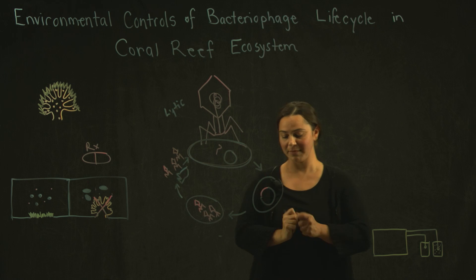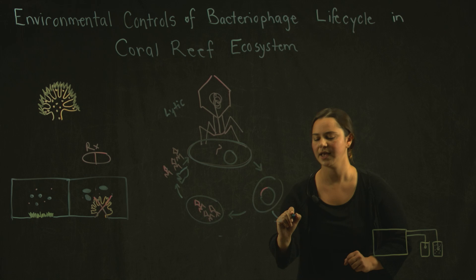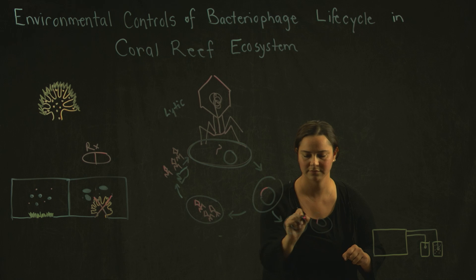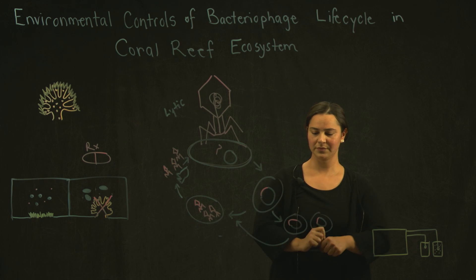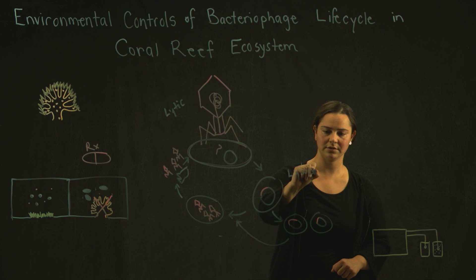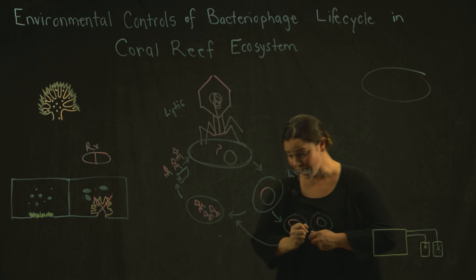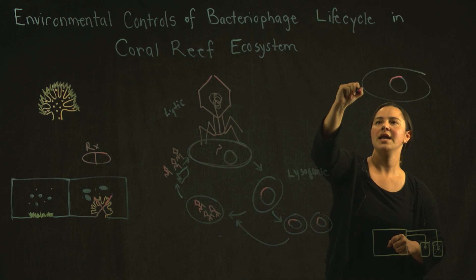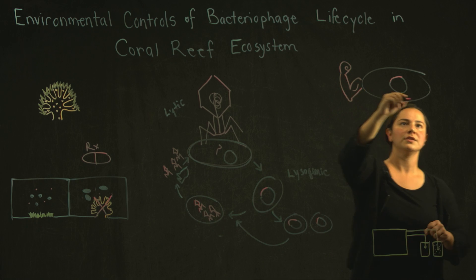But many bacteriophage can choose to delay this section of the process and stay integrated into the genome of the bacteria, replicating with the bacteria for as long as those conditions are favorable, and then it continues the cycle. In this scenario, called the lysogenic lifecycle, the bacteriophage does not want the bacteria to die because then it dies too. So it wants to protect that bacteria cell, and it does that by expressing genes that aid in the survivorship of the cell.